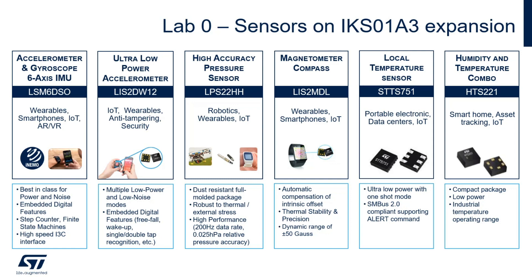Fifth, a Contact Temperature Sensor, STTS751. This is typically used to monitor the temperature of components which do not have an embedded temperature sensor. In this case it is reporting the temperature of the expansion board itself. Sixth, a Relative Humidity and Ambient Temperature Sensor, HTS221. This completes the set of sensors to cover both motion and environmental applications.